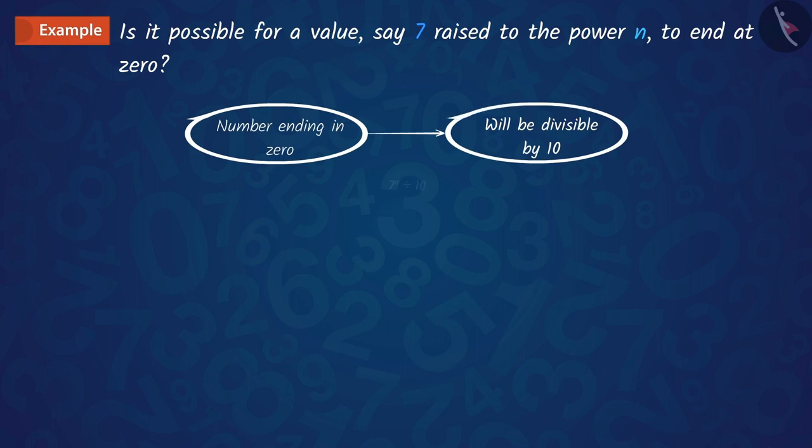So, we can say that if the number 7 raised to the power n ends with digit 0, then it will be divisible by 10. This means that 7 raised to n should have 2 and 5 among its prime factors.